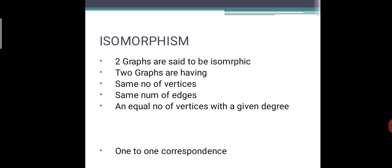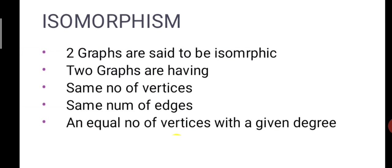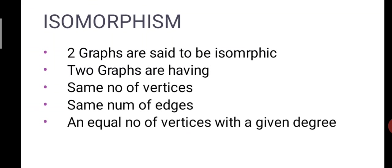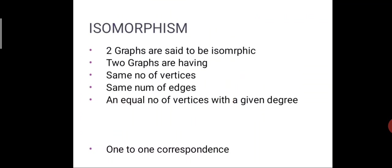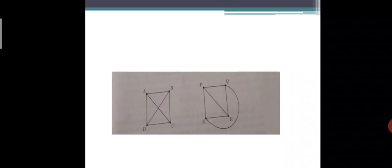What is isomorphism? Take a minute and think. Two graphs are said to be isomorphic if they have the same number of vertices, same number of edges, and equal number of vertices with a given degree. Then we call it as isomorphic — those two graphs are isomorphic.